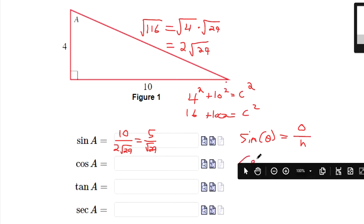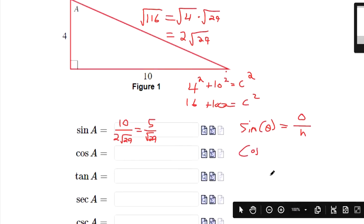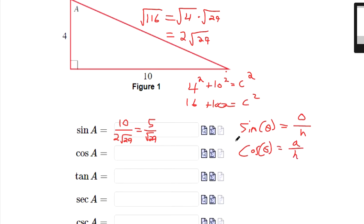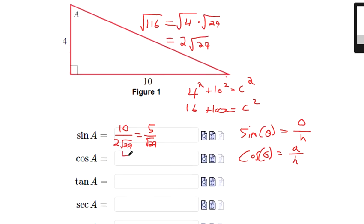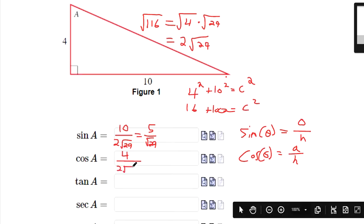But cosine of angle theta is the adjacent over the hypotenuse. So the adjacent side is the one that's not the opposite and the one that's not the hypotenuse. So this is our adjacent side. So cosine of A is 4 divided by 2 square root of 29. And that simplifies to be 2 over the square root of 29.